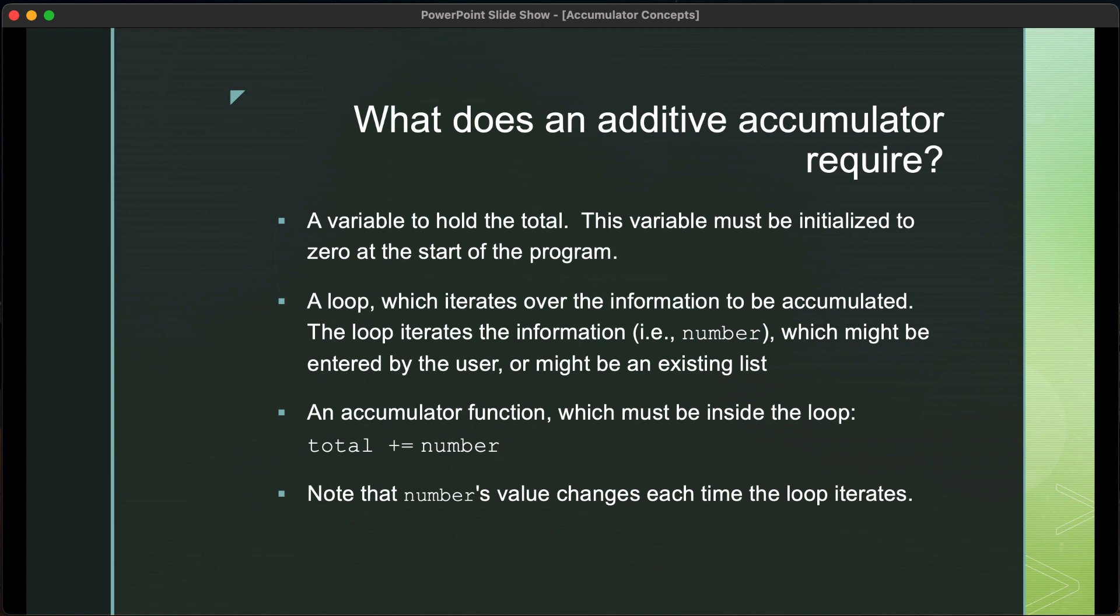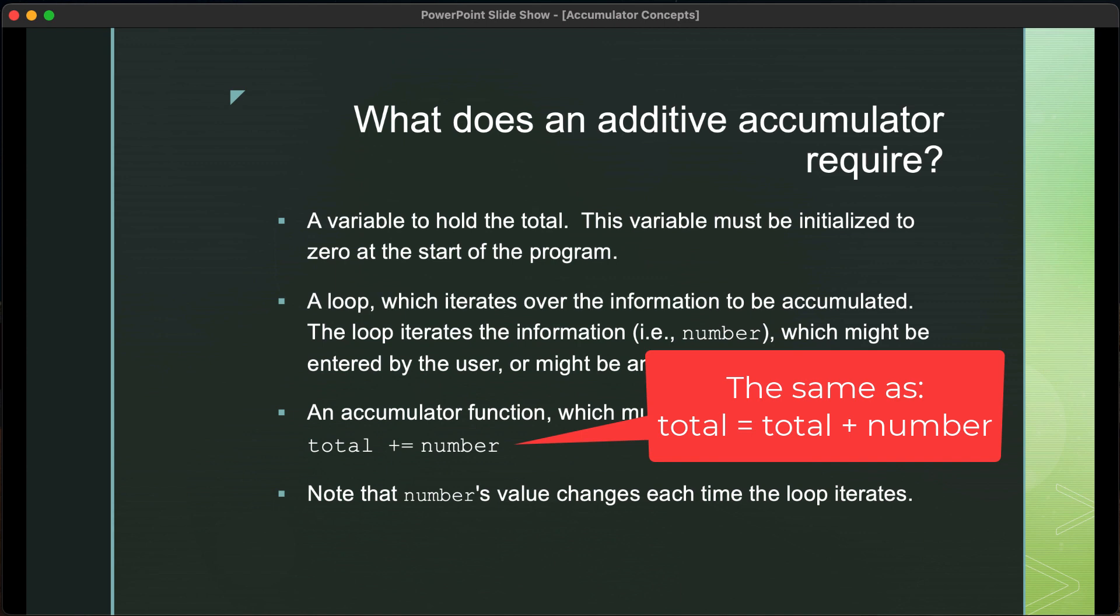Next, you need an accumulator function, and that function has to be inside the loop. A typical approach is to use that composite equals sign. So to say, for example, total plus equals number, which, if you recall, is the same thing as total equals total plus number.